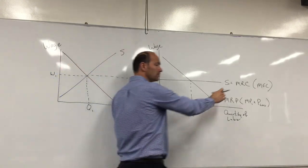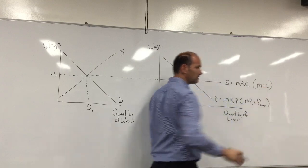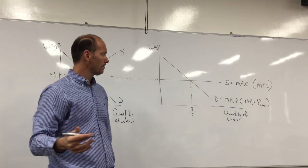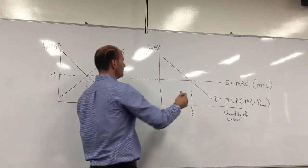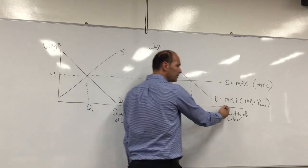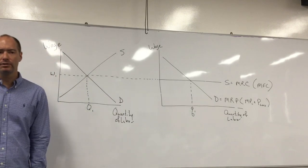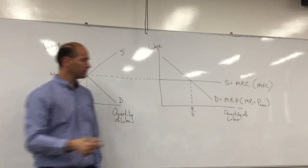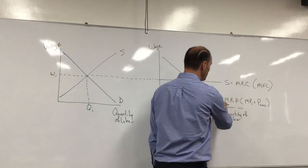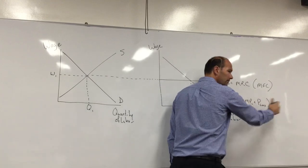Demand for labor is downward sloping. For the firm, we refer to it as the marginal revenue product, or MRP. Make sure you label it D equals MRP.